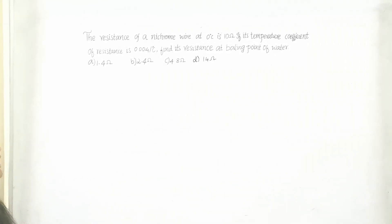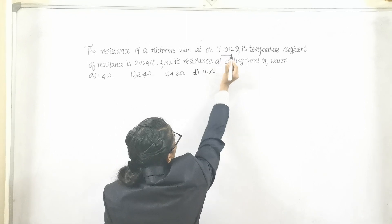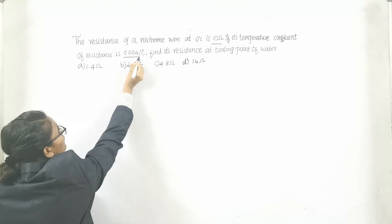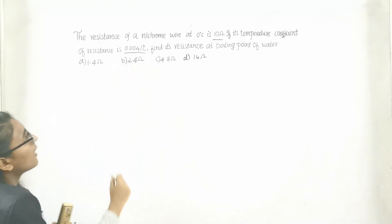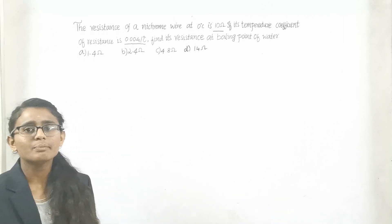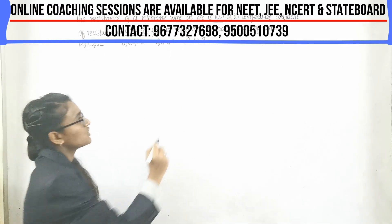Let me highlight the important points in the question. At 0 degree Celsius it is 10 ohms, and they have given temperature coefficient is 0.004 per degree Celsius. Find its resistance at boiling point. We know that boiling point temperature is 100 degree Celsius.